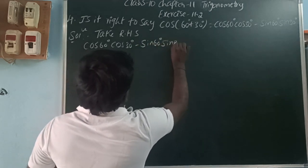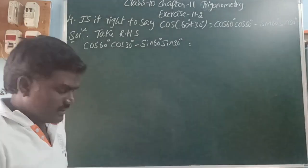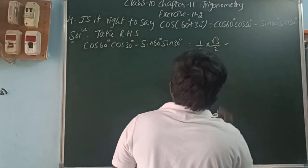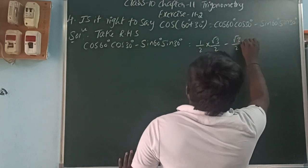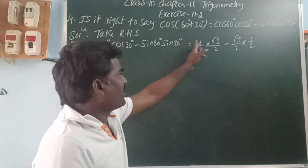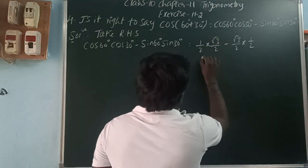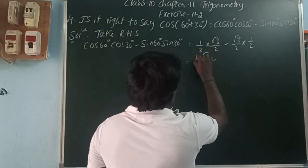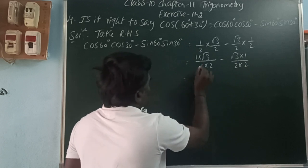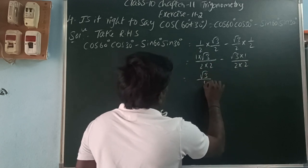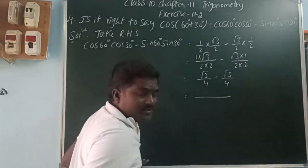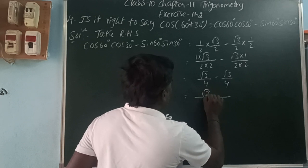cos60 is 1 by 2, cos30 is root 3 by 2, minus sin60 which is root 3 by 2, and sin30 which is 1 by 2. Multiplying the fractions: 1 into root 3 gives root 3 by 4, minus root 3 into 1 gives root 3 by 4.